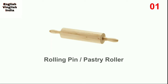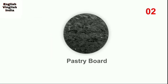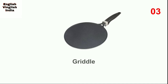Rolling pin, also known as pastry roller — we use it for making dough ball flat and thin. Next, pastry board. A pastry board is a board which is made of wood or marble, and on this board we flatten the dough ball.